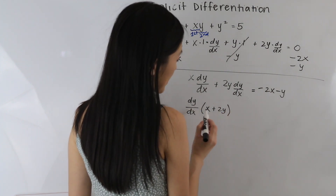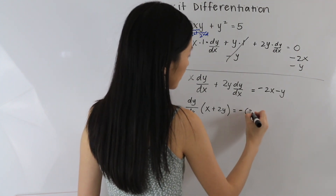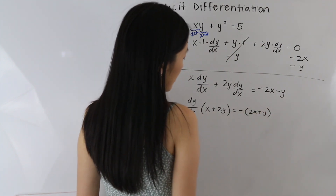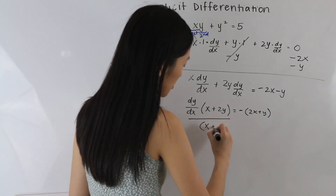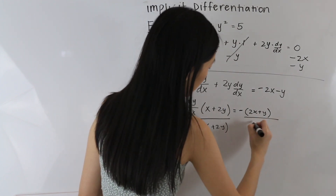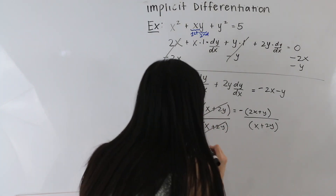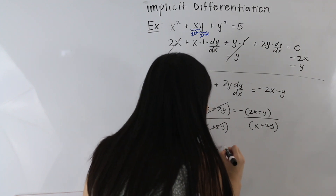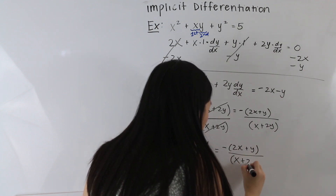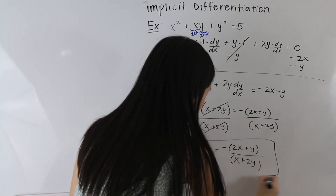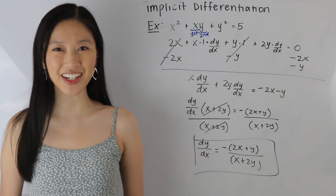So we get dy over dx times x plus 2y, and on the right hand side let's factor out a negative sign. We are going to solve for dy over dx by dividing both sides by x plus 2y. These cancel out and we get dy over dx is equal to negative 2x plus y over x plus 2y. That is our final answer, and that is how you use implicit differentiation to find the derivative of an implicit function. Thank you guys so much for watching and I'll see you guys next time.